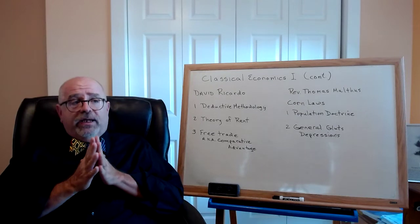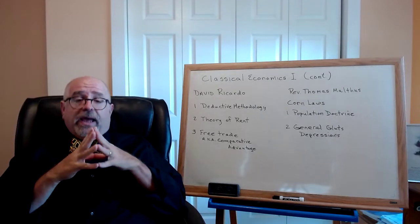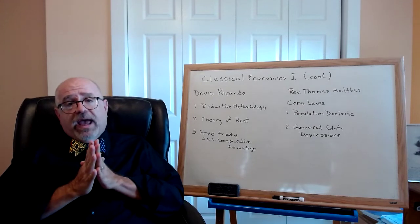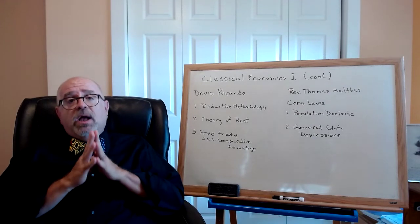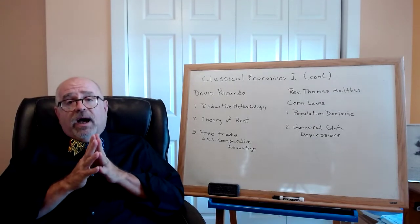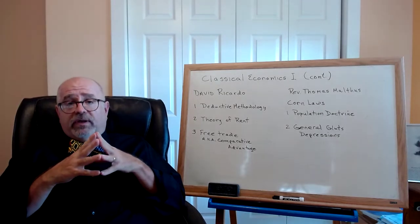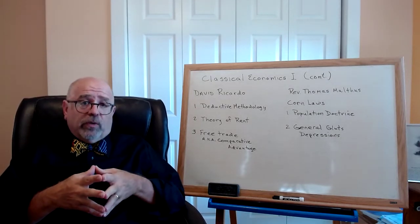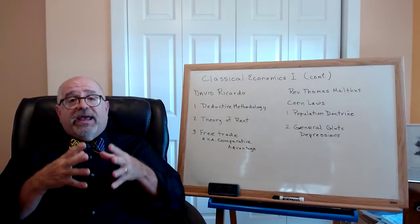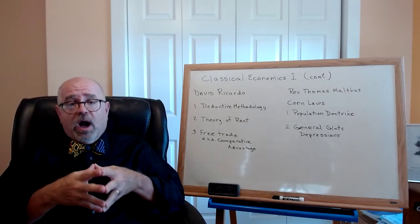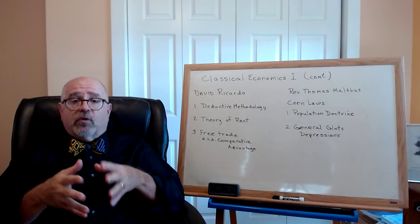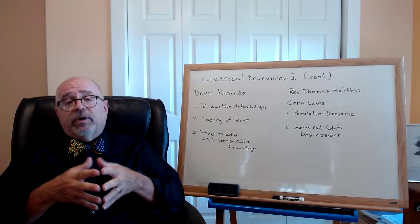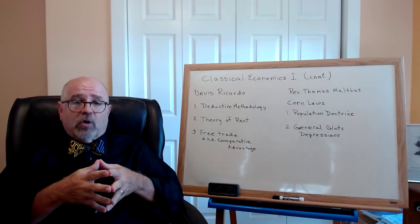There are two things I need to say here. First of all, Adam Smith and all classical economists after him believed that the economy operated always at full employment — in fact, the full employment of all resources. This was a Say's Law circular flow economy to them, where supply creates its own demand. So the notion of involuntary unemployment was an impossibility in this framework.